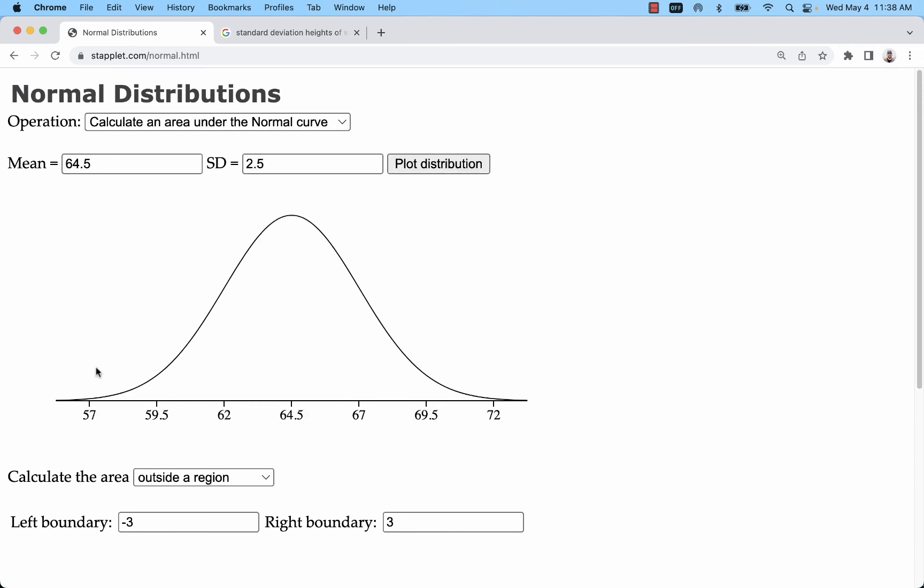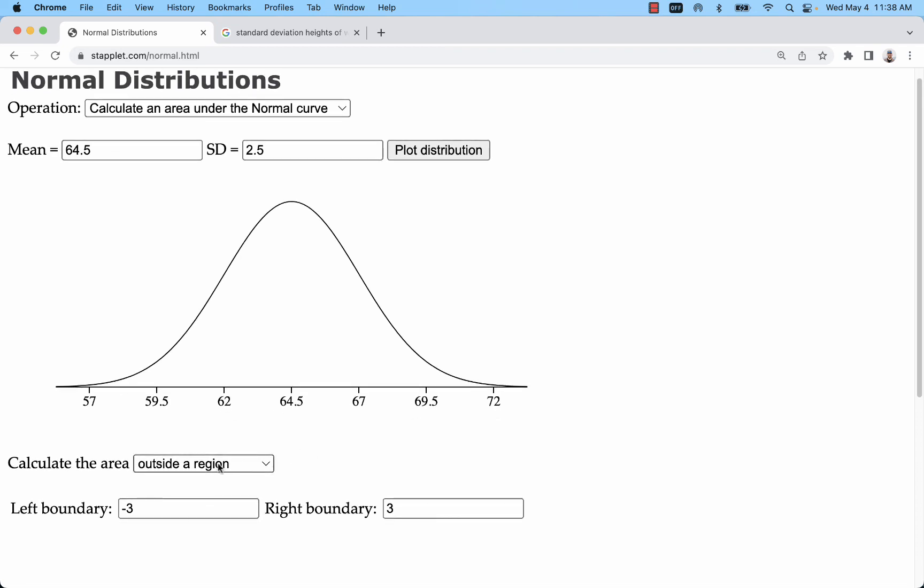So now what we have is instead of a z-axis, we've got an x-axis. This is going to represent heights of women in the United States in inches. And we can look at percentiles, percentages, probabilities, things like that.